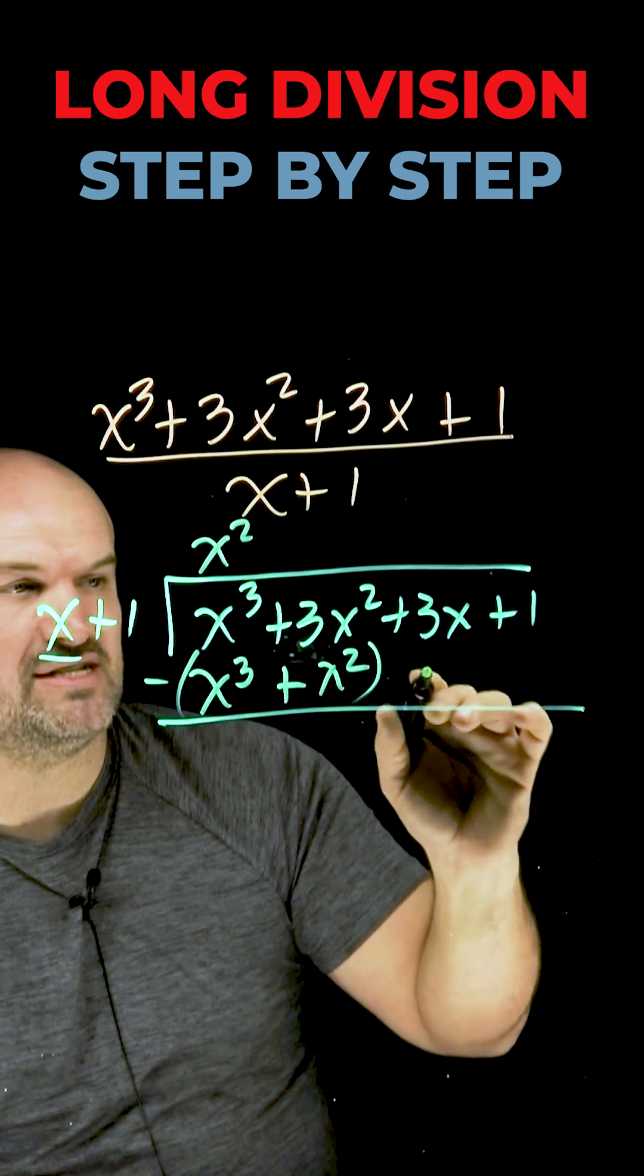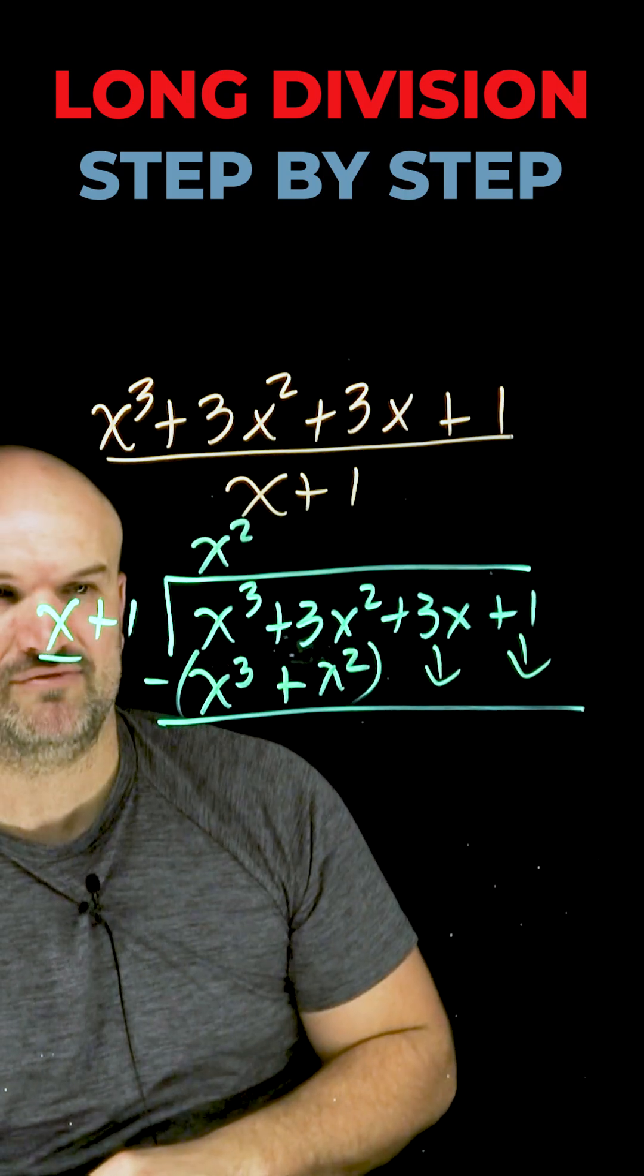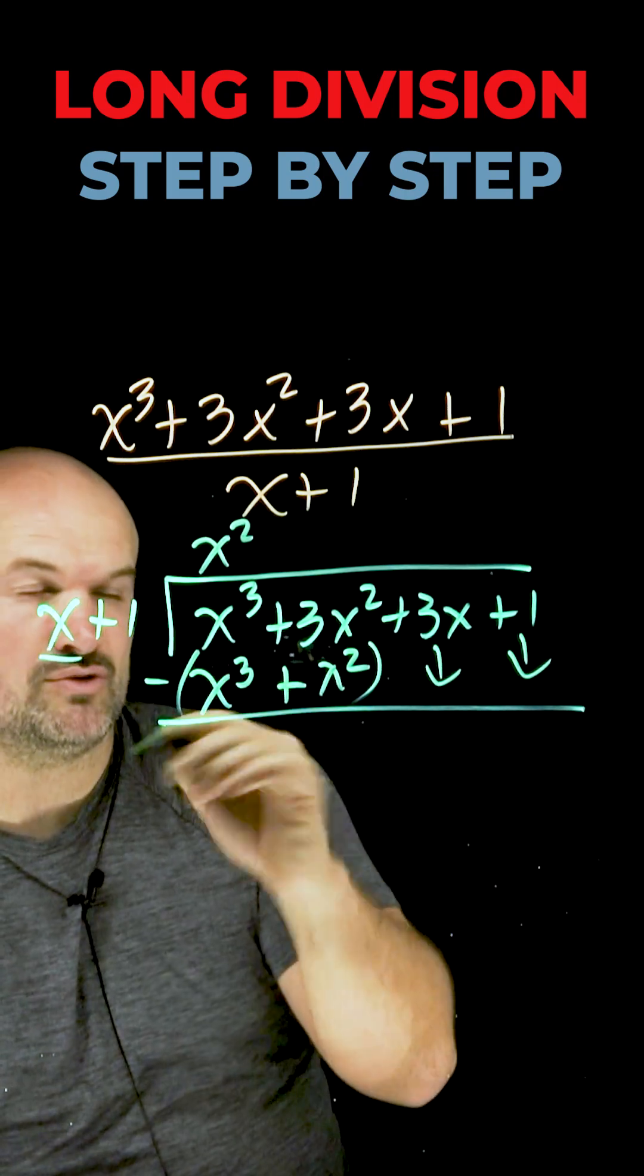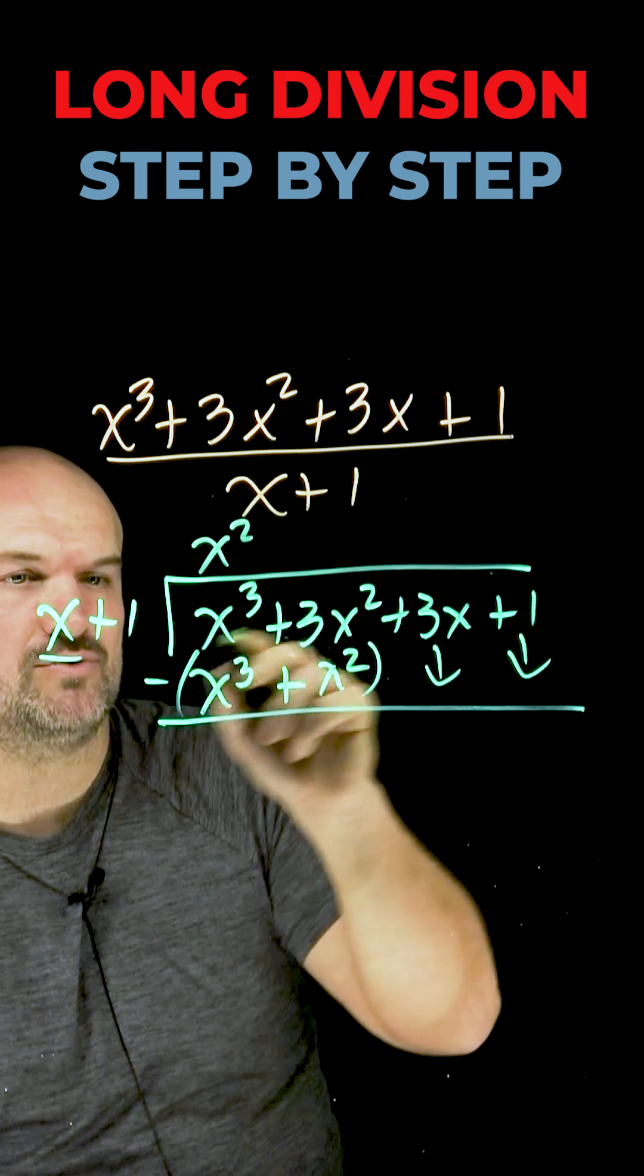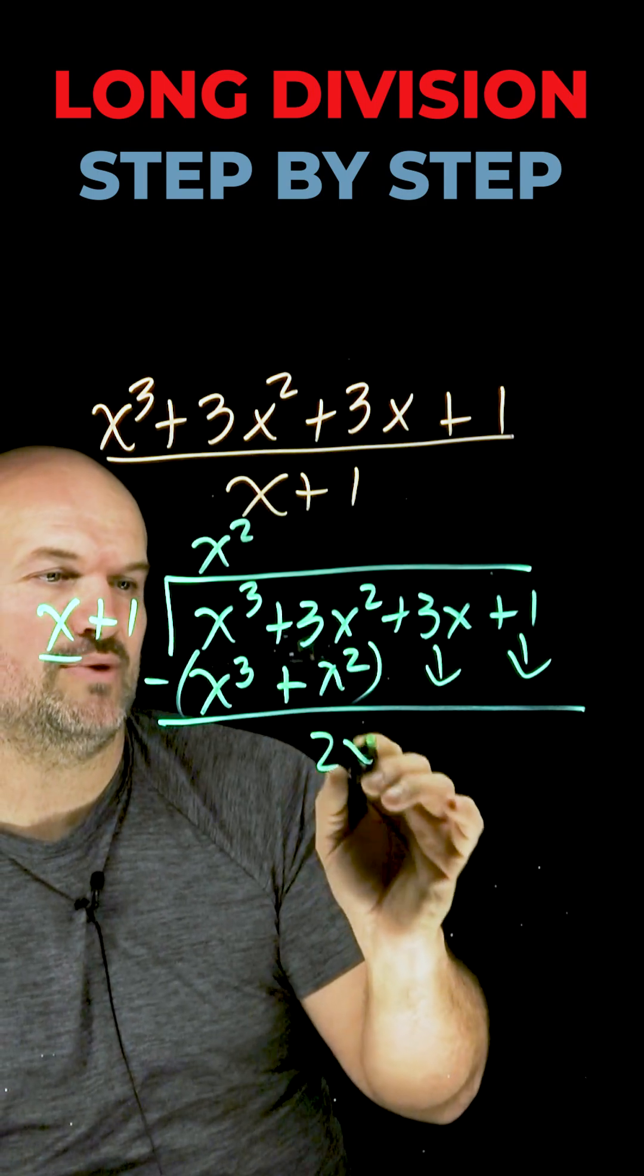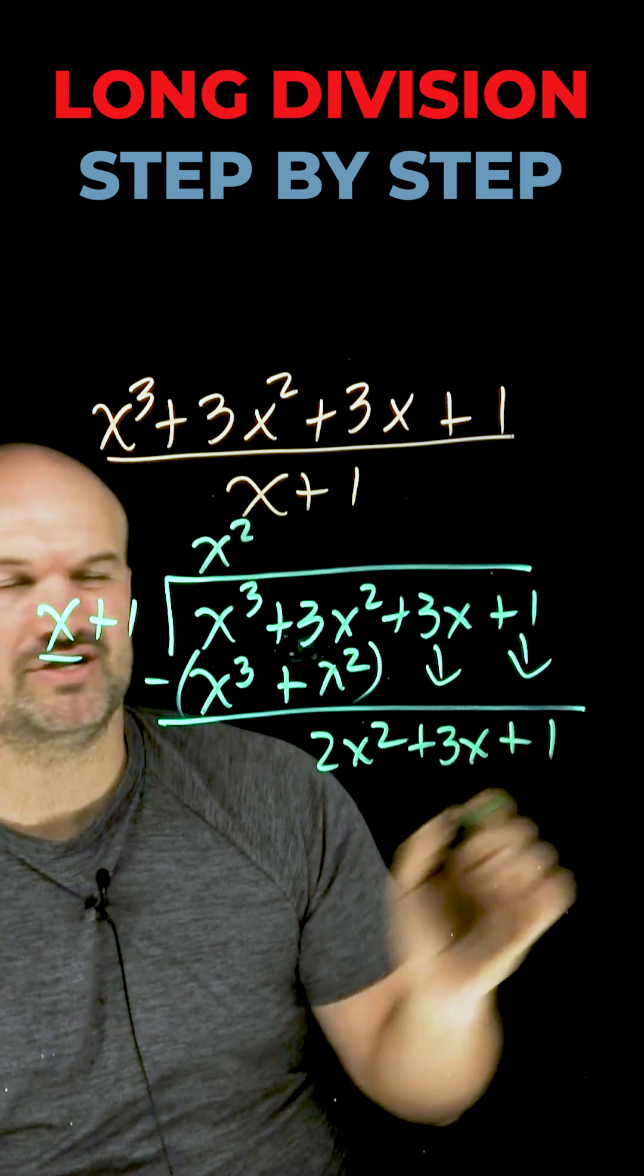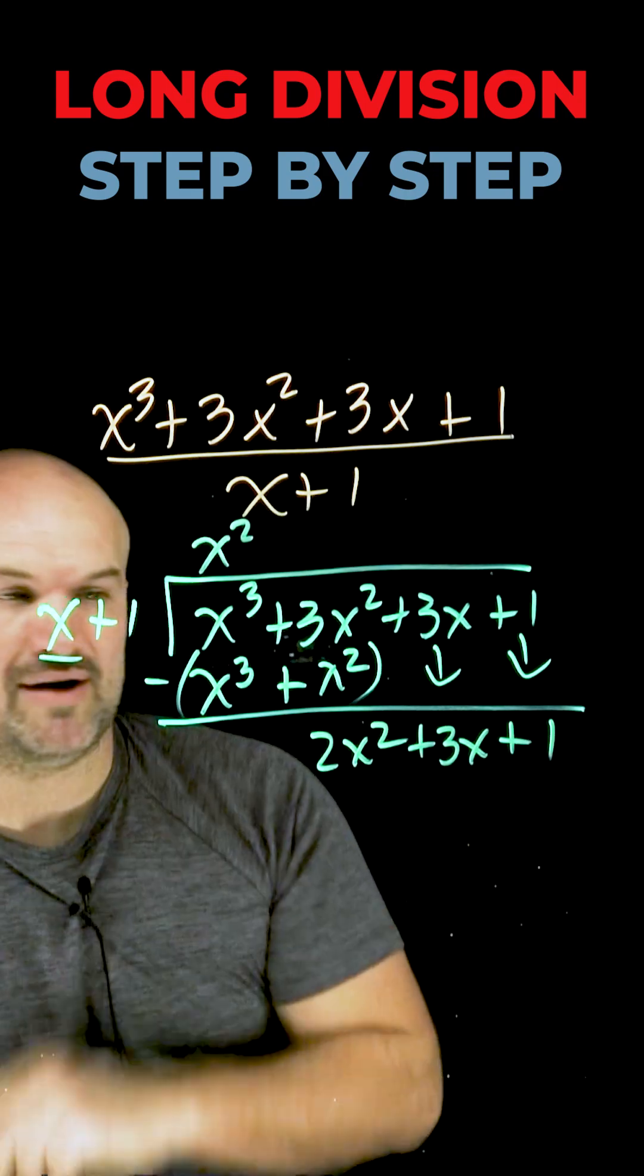Now I'm going to group those two terms and subtract them. These I'm going to have as place values, so I'm just going to bring them down because you're technically subtracting from 0. x cubed minus x cubed is going to be 0x cubed. 3x squared minus x squared is 2x squared. And then I can bring these terms right down because you're just subtracting them from 0. That was round number 1.